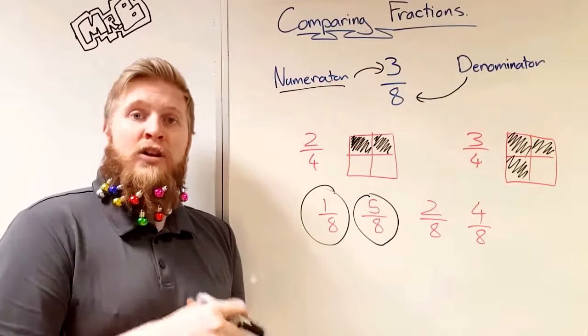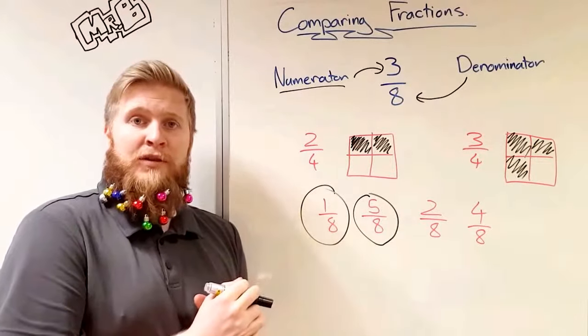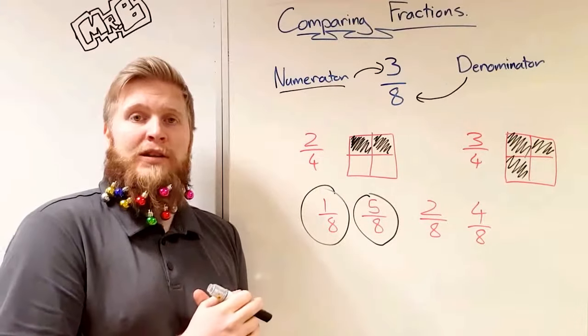So if you said five-eighths is the biggest in those four fractions, you'd be right. And if you said one-eighth was the smallest, you were right there, because we know five is the biggest number there and one is the smallest number. That's pretty easy when we've got denominators on the bottom which are the same. But we don't always have that. Sometimes the denominators, the numbers on the bottom, are different. When that happens, we have to do something else. Let's have a look at that now.